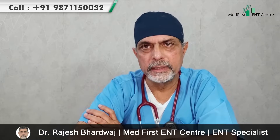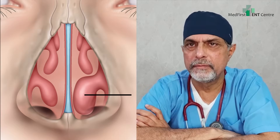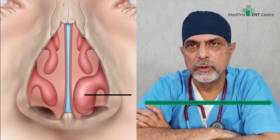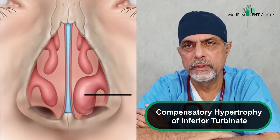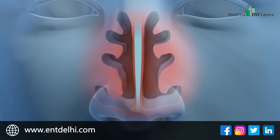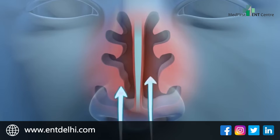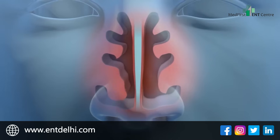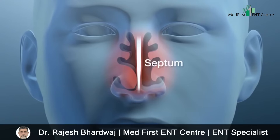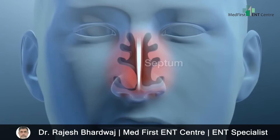Sometimes the septum is deviated from the left side, and there is inferior turbinate hypertrophy from the right side — this is called compensatory hypertrophy of the inferior turbinates. Sometimes the patient has paradoxical blockage: the septum is deviated from the left side, but the blockage is on the right side, because the turbinates are enlarged on that side.